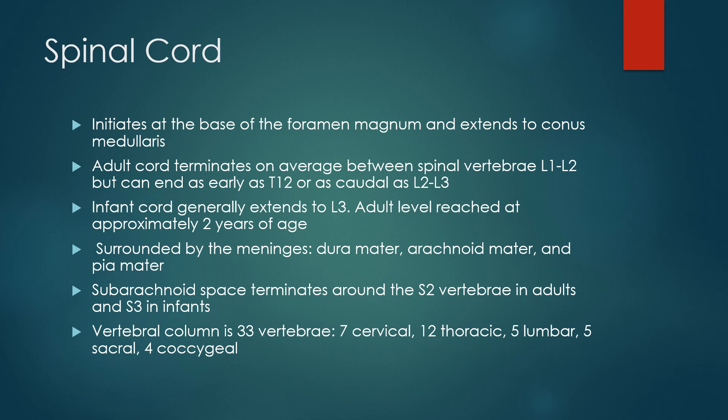Somewhat of interest: in utero, the spinal cord actually extends the entire length of the vertebral column, but as bony structures and neural elements grow at different rates, the cord seemingly regresses to a higher level. The cord is surrounded by the meninges — dura mater, arachnoid mater, and pia mater — which we'll go more in depth on later.